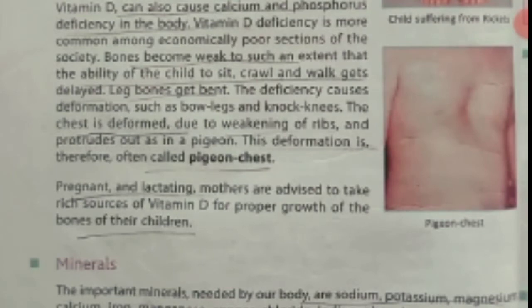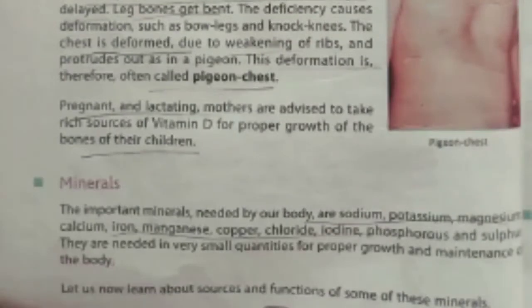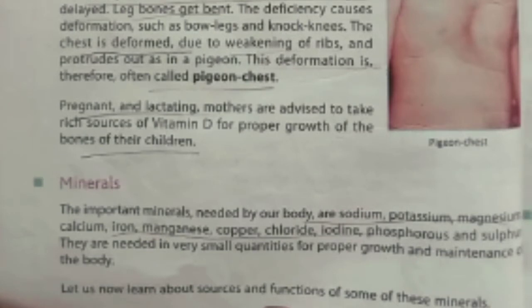Next topic is minerals. Some minerals are very important for us: sodium, potassium, magnesium, calcium, iron, manganese, copper, and chloride. These are minerals that are important and we should take them in our diet in small amounts. On the next page, a table is given to you.